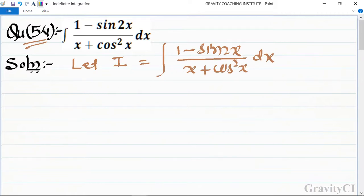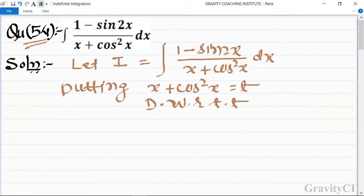If we differentiate the denominator, we'll get the numerator, so we'll use substitution. Putting x + cos²x = t and differentiating with respect to t...